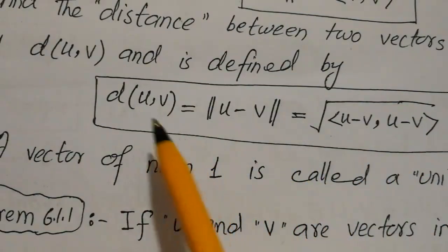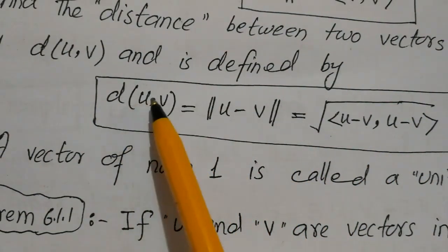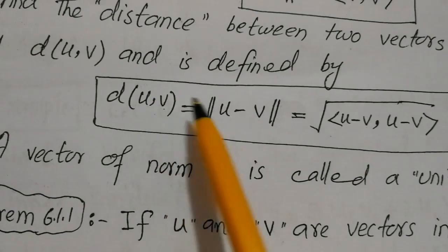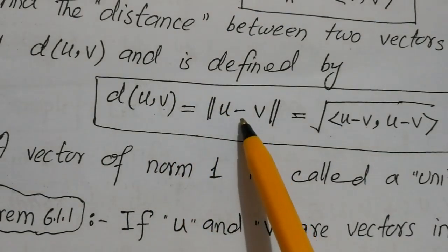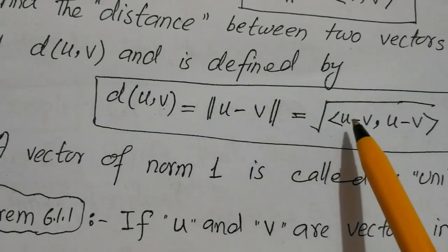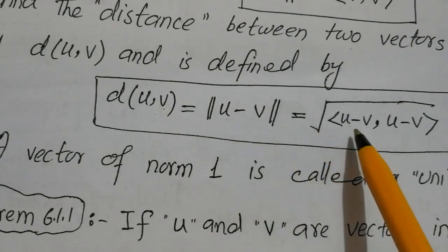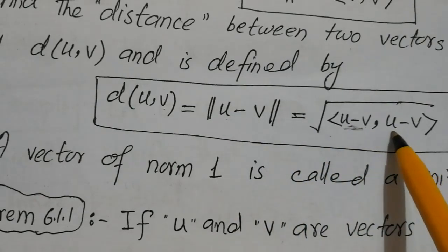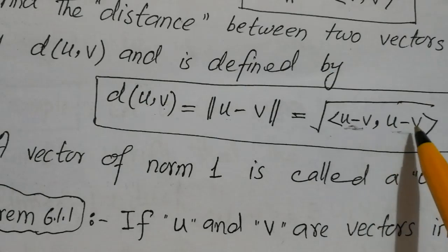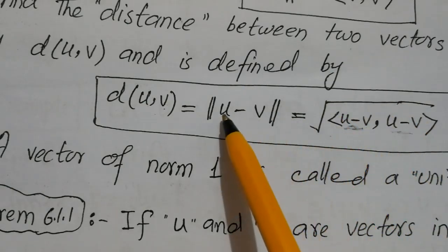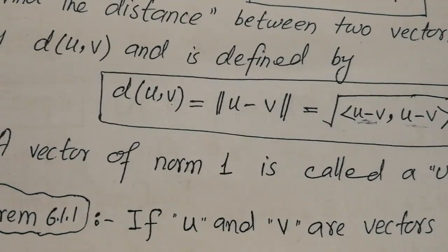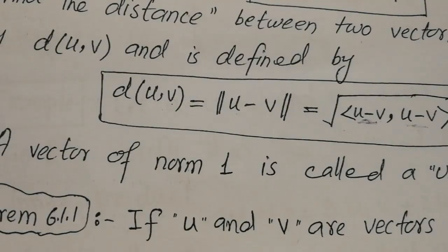The norm is associated with distance. The distance between two vectors u and v, written d(u,v), is nothing but the norm of u minus v. In terms of inner product, that is the square root of the inner product of (u−v) with itself — √(<u−v, u−v>). That was for the standard inner product in Rⁿ.